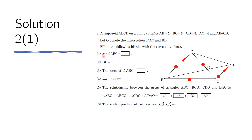The first question asks us for the cosine of this angle. We notice that we know this side, this side, and this side, which means we can use the cosine law. In the cosine law, C and c are opposite each other — C is the angle, and small c is the length of the opposite line segment. A and B can be assigned to the remaining sides.